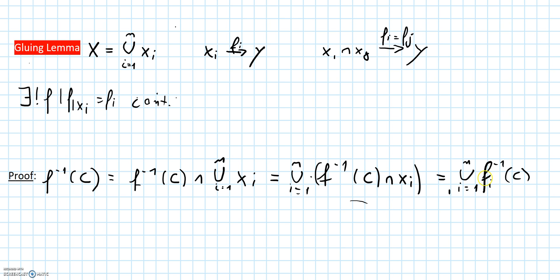So we have that the pre-image of c under the map f is a finite union of pre-images of the set c of maps fi, and these maps fi are assumed to be continuous on xi.